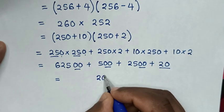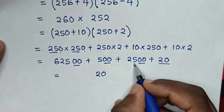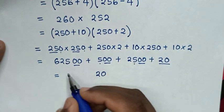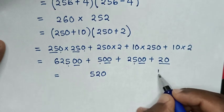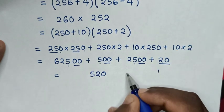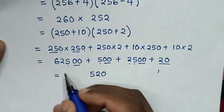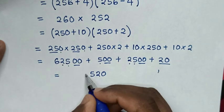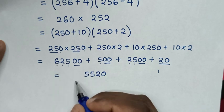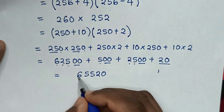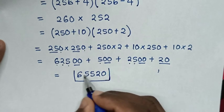So it will be 20. The third digit from the last: 5 plus 5 plus 5 is 15, carry the 1. The fourth digit: 2 plus 1 is 3, and 3 plus 2 is 5. The fifth digit is 6. So this is our final answer: 65,520.